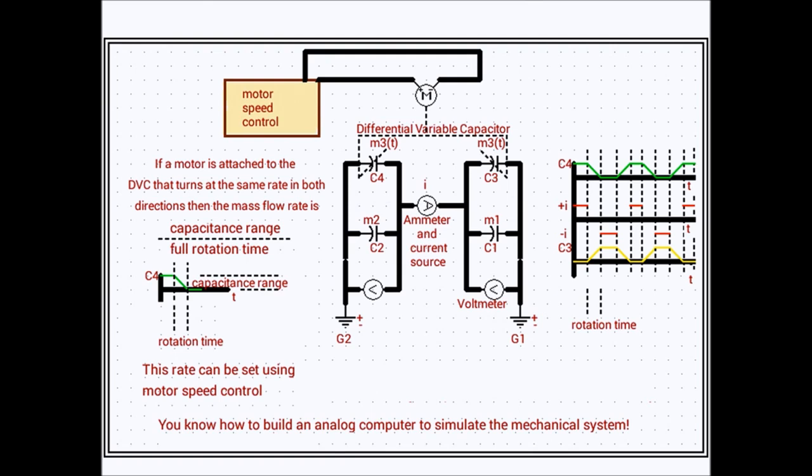After this motor speed control rotation of the motor is complete, we now reverse the polarity of the current source. And this is the equivalent to a force trying to pull the two masses together. We let that go on for our desired amount of time. And the voltmeter measures the voltage waveforms that result.